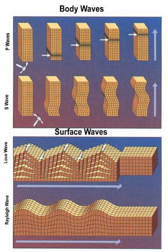The path that a wave takes between the focus and the observation point is often drawn as a ray diagram. When reflections are taken into account there are an infinite number of paths that a wave can take. Each path is denoted by a set of letters describing the trajectory and phase through the Earth. In general, an upper case letter denotes a transmitted wave and a lower case denotes a reflected wave, with exceptions G and N. For example, ScP is a wave that begins traveling towards the center of the Earth as an S wave and upon reaching the outer core reflects as a P wave. SPKIKP is a wave path that begins as an S wave, reflects as a P wave at the surface, then travels through the outer core, the inner core, the outer core, and the mantle.